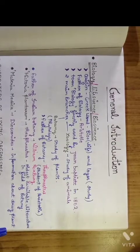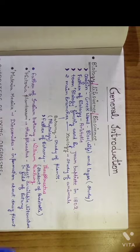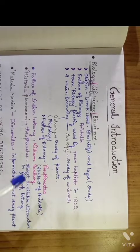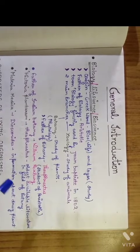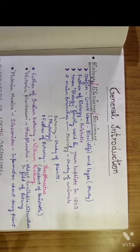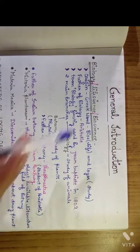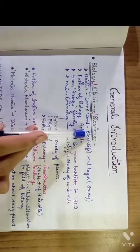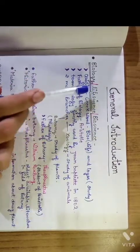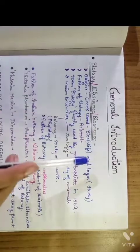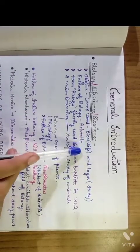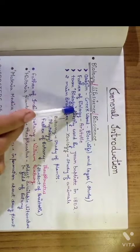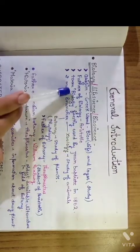Hello everyone, so today we are going to study the general introduction of botany. First of all we should know biology because botany is the branch of biology. Biology, we call it life science or bioscience also. The word biology originates from the Greek word 'bio' means life and 'logos' means study. Father of biology is Aristotle.